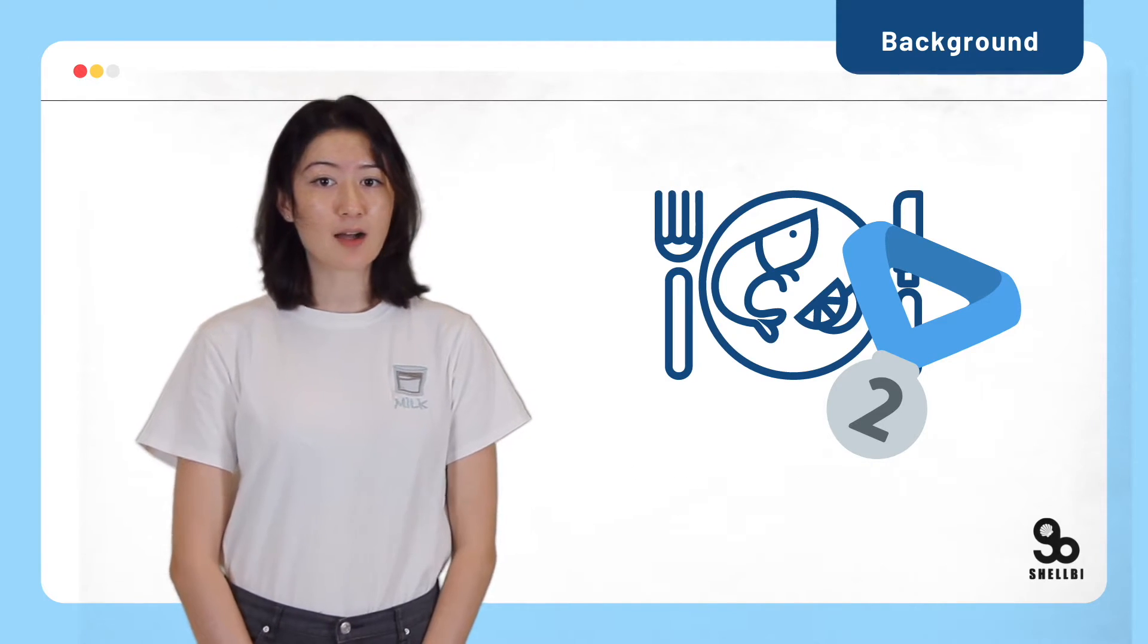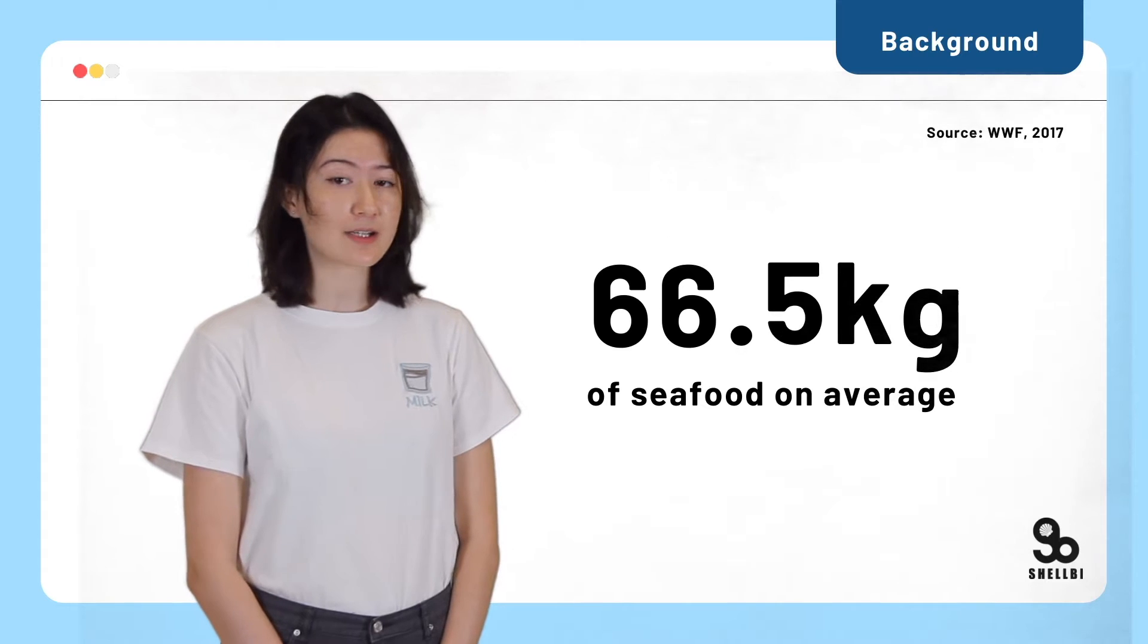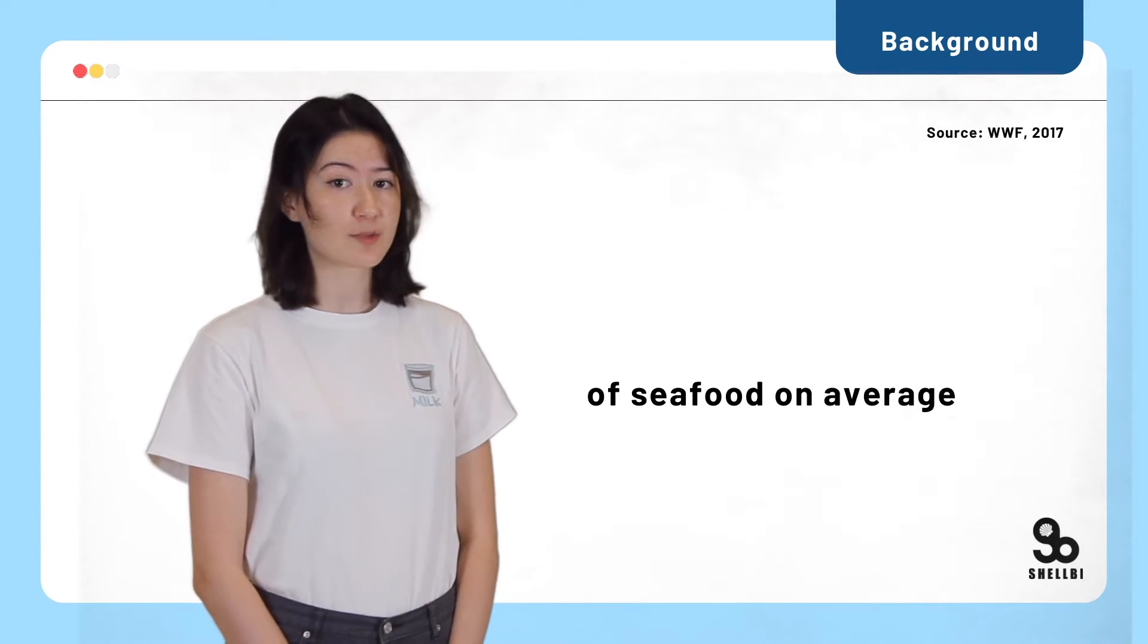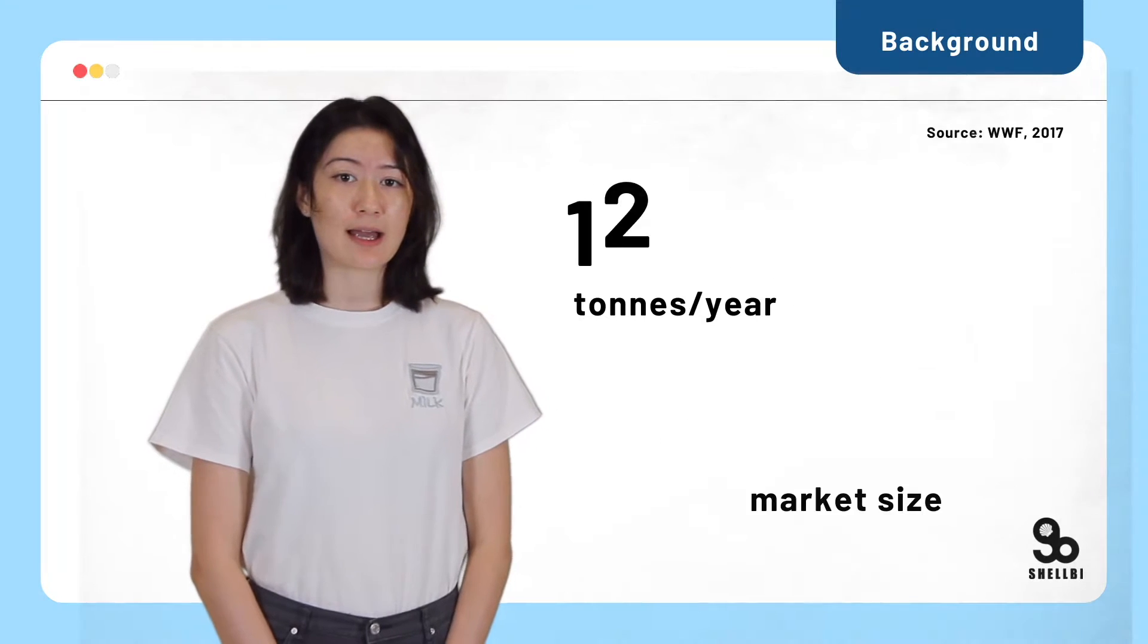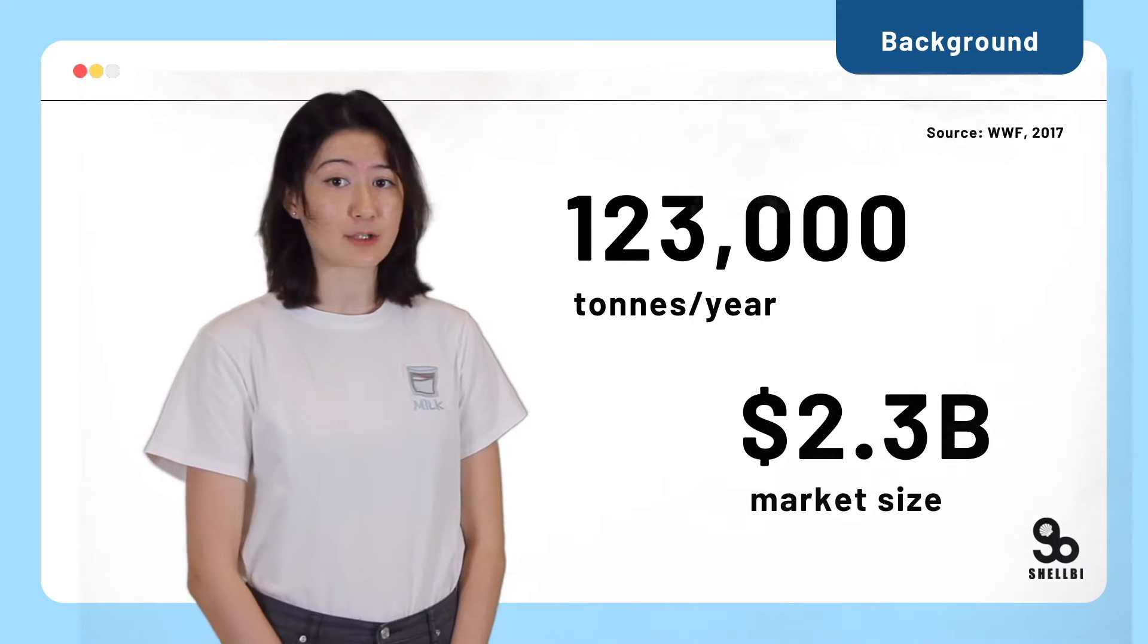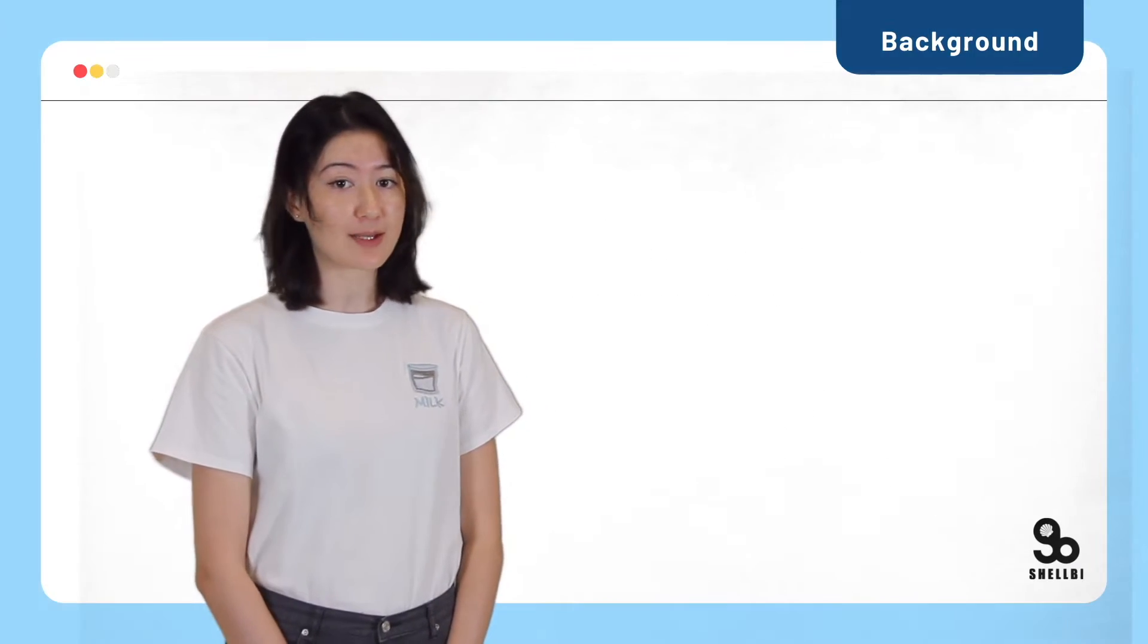Per capita, Hong Kong ranks second in terms of seafood consumption. Each of us consumed 66.5 kg of seafood on average every year, which was more than three times the global average. In 2019 alone, the estimated production was about 123,000 tons valued at $2.8 billion. Hong Kong people love to eat seafood.